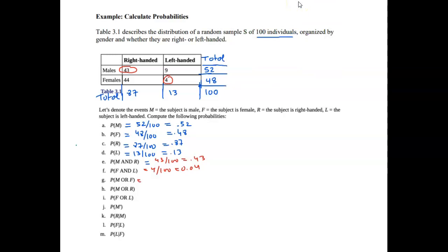For probability of male or female, there's no overlap between them, so you simply add the two probabilities: 52 over 100 plus 48 over 100 equals 100 over 100. Because we have no non-binary or non-gender-conforming data in our table, this gives a probability of 1.